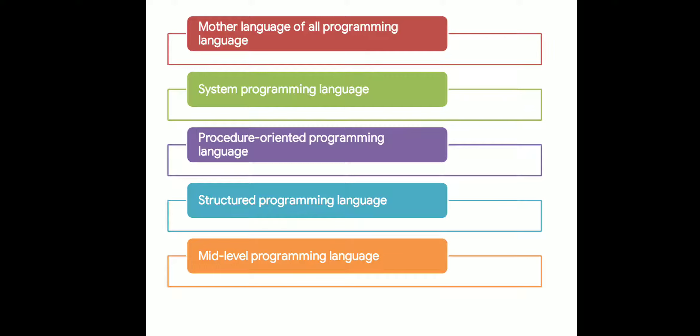C is a system programming language. C has procedures, so it is a procedure-oriented programming language. C also has a lot of structures and restrictions, making it a structured programming language. C is a mid-level language — the low-level language is assembly language, and C sits in the middle.